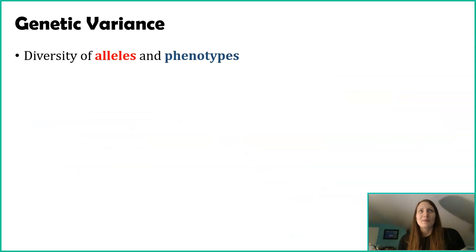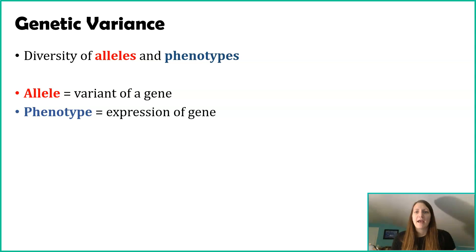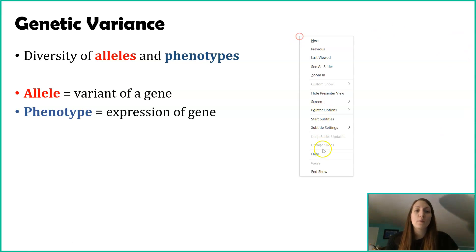Now let's be a little bit more specific. How do we determine what variance is? The variation we're looking at is essentially the diversity that exists in different types of alleles and phenotypes. If you don't remember those words from previous classes, remember an allele is a variation of a gene and a phenotype is the expression of that gene.